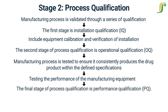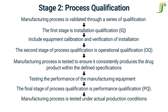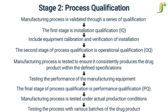The final stage of process qualification is performance qualification (PQ). In this stage, the manufacturing process is tested under actual production conditions to demonstrate that it can consistently produce the drug product that meets the defined specifications. PQ may include testing the process with various batches of the drug product to ensure that the manufacturing process is robust and reliable. PQ testing may also involve testing the drug product's stability under various conditions, such as different storage temperatures and humidity levels.